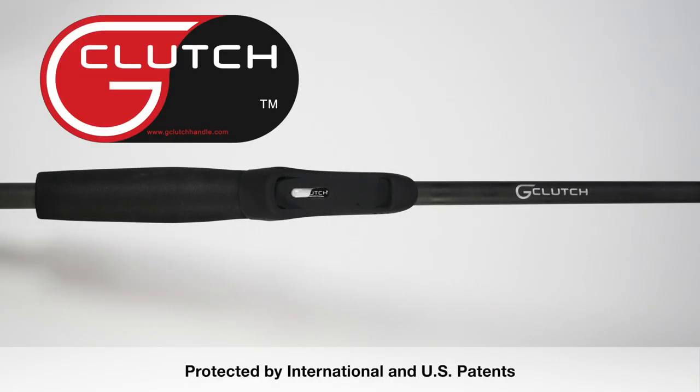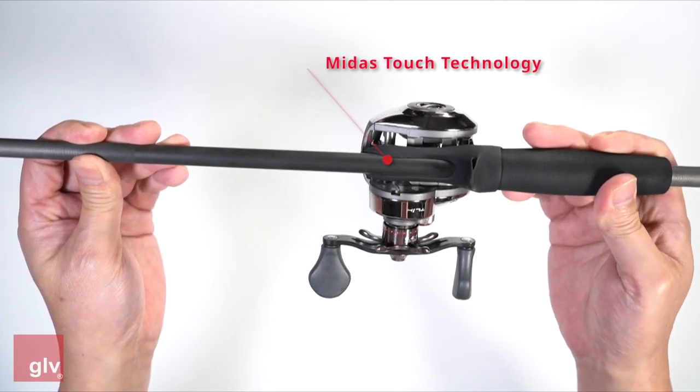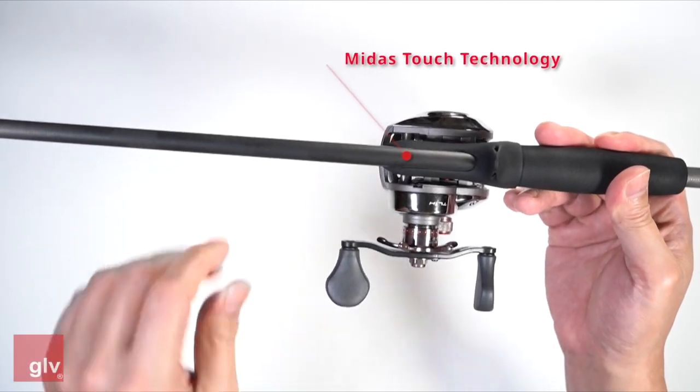G-Clutch is a patented fishing rod handle system that is revolutionary in the industry, thanks to Midas Touch technology. With Midas Touch, you get direct rod blank contact.